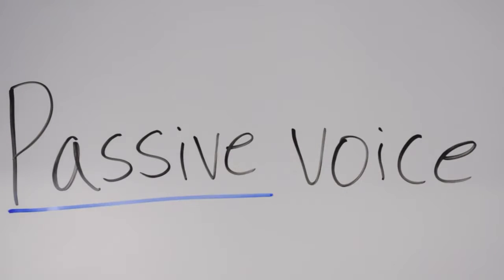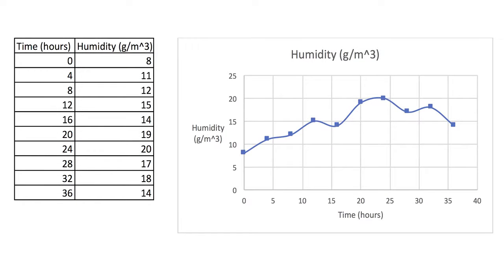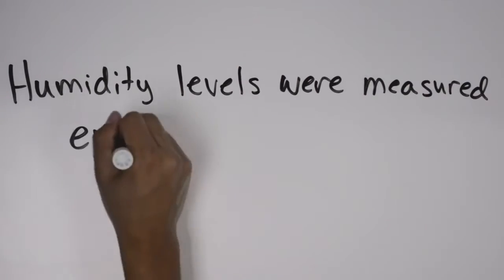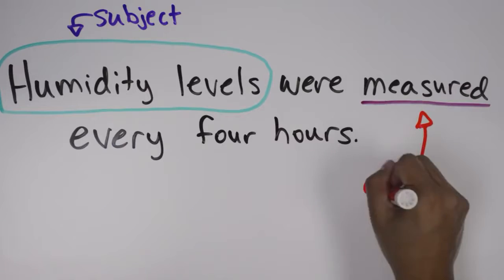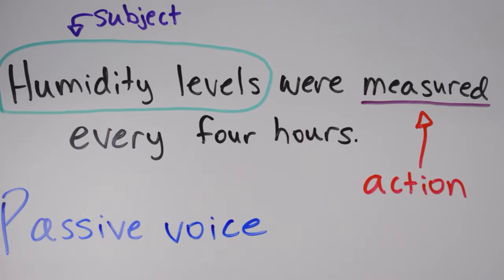In some disciplines, passive voice is often preferred. Some scientific disciplines prefer passive voice because it puts emphasis on what was done rather than who did it. For example, one could say, humidity levels were measured every four hours. In this situation, it doesn't really matter who did the measuring. So we leave the actor out of the sentence.